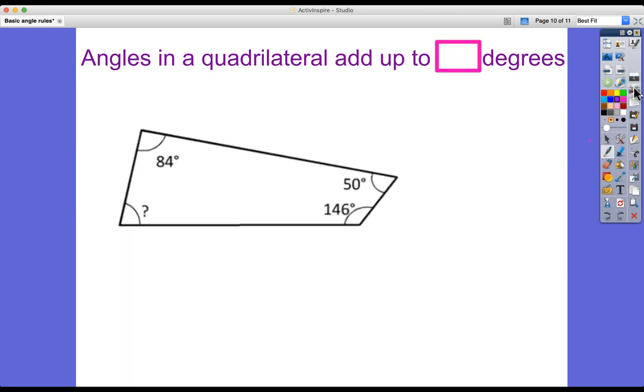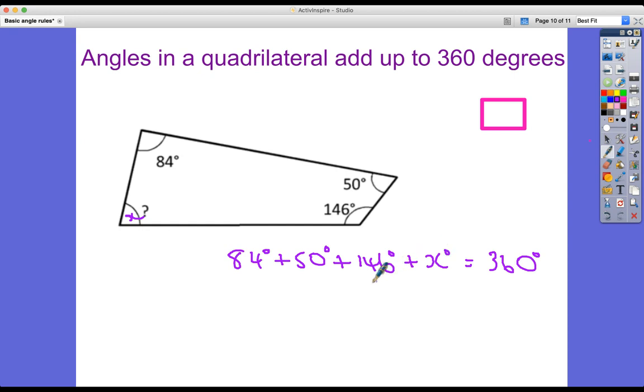And one more. Now this one hasn't got any right angles in, but it's the same process. They're going to add up to 360. Let's go and find what it is. So what's 84 plus 50 plus 146 plus X, let's call it X, equals 360. 84 plus 50 plus 146 is 280. So these are all degrees. 280 degrees plus X degrees is 360 degrees. So X is 360 minus 280. So what is it? It's going to be 360 minus 280, 80 degrees. There we go. Final answer.